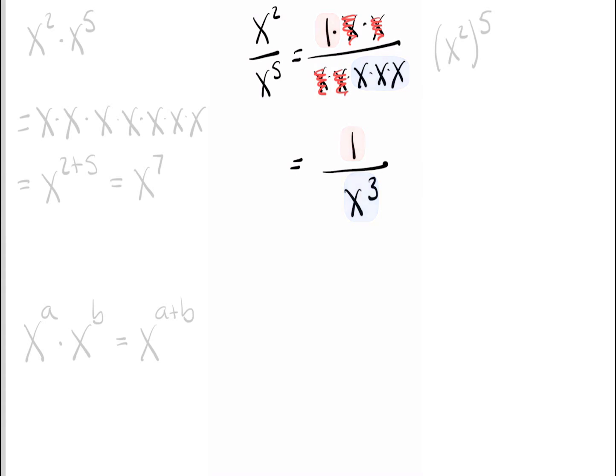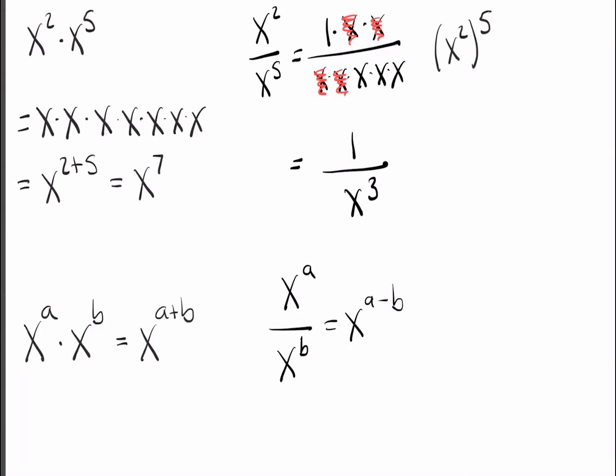I'll go ahead and give you that general rule, though, because I know people like to have it. If you have x to the a over x to the b for whatever a and b you want, that's just x to the a minus b. Again, that might give you some negative powers, but this is always going to give you the right answer.